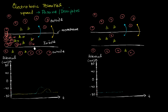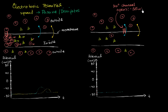Now let's play out this scenario again, but let's also throw in some voltage-gated ion channels. Let's say this right over here is a voltage-gated sodium channel. Let's say it opens at negative 55 millivolts — so right around there is that threshold — and let's say it closes at positive 40 millivolts.